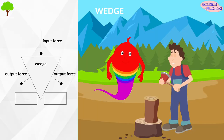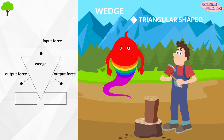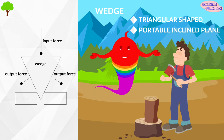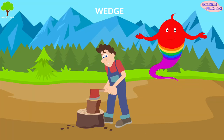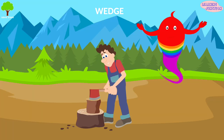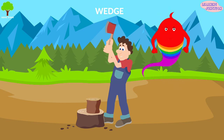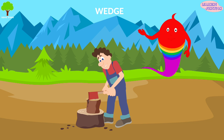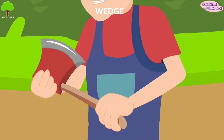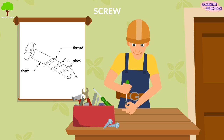Wedge. A wedge is a triangular shaped tool and is a portable inclined plane. It can be used to separate two objects, lift up an object, and hold an object in place. An axe blade is an example of a wedge.